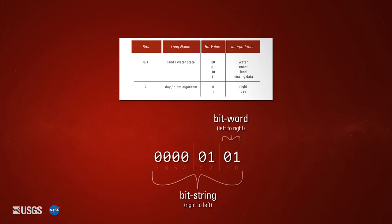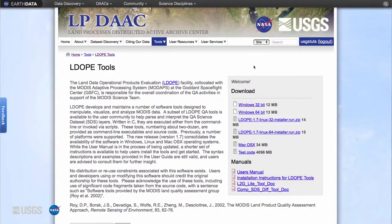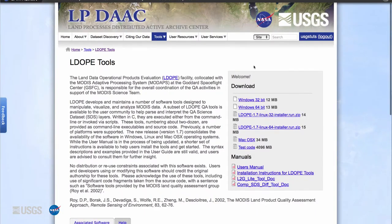For example, the bit word for bit number 0–1, land water state, is 01, which means the pixel is of a coast. Bit number 2, day-night algorithm, is 1, which means the pixel is from the day. There are several tools that can be used to interpret quality information.